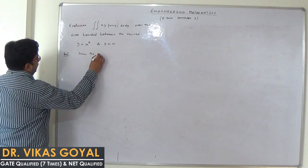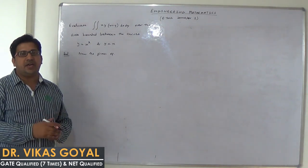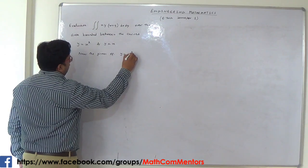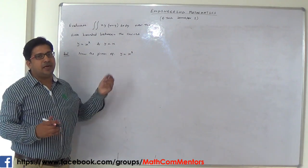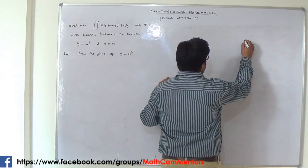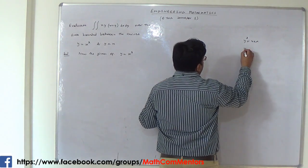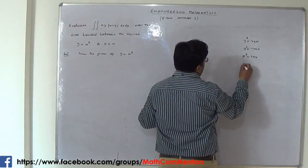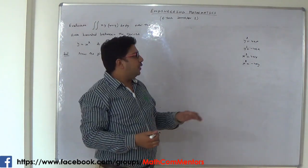We trace the given curves. The given equation y equals x squared — you should focus here — when y equals x squared, this is the equation of a parabola. Generally, parabola has 4 equations: y squared equals 4ax, y squared equals minus 4ax, x squared equals 4ay, and x squared equals minus 4ay. These are the four equations of parabola.